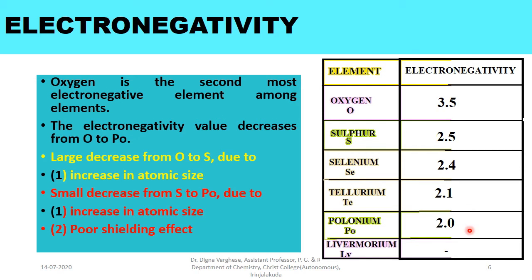The least electronegative element in the oxygen family is polonium and the most electronegative element among group 16 members is oxygen. The electronegativity order is: O > S > Se > Te > Po.